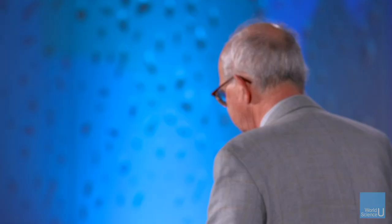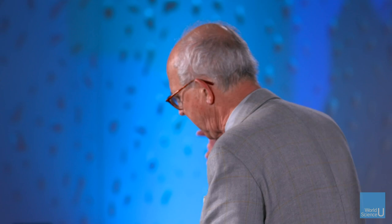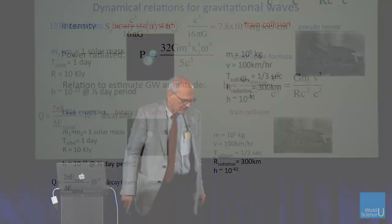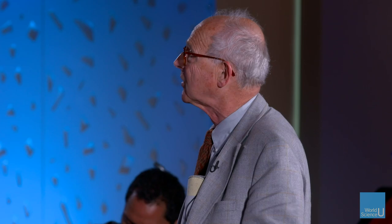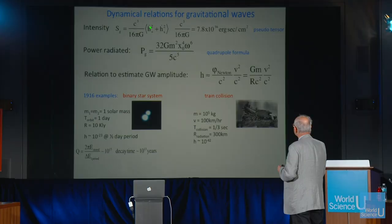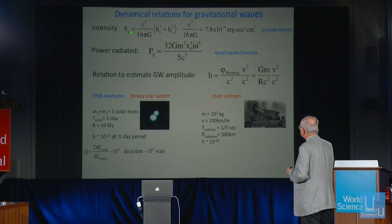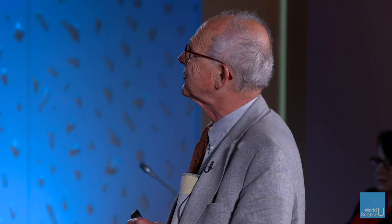The strain H is the field amplitude — H equals delta L over L. This first equation relates the time derivative of the strain squared with the intensity in the wave, what you'd call the power — ergs per centimeter squared per second in CGS units. In electromagnetism you have a very similar relation between field quantities and intensity. But this one has a very complicated and terrible constant — it's a god-awful huge number — and that says it takes an enormous amount of energy to produce even a tiny bit of strain.